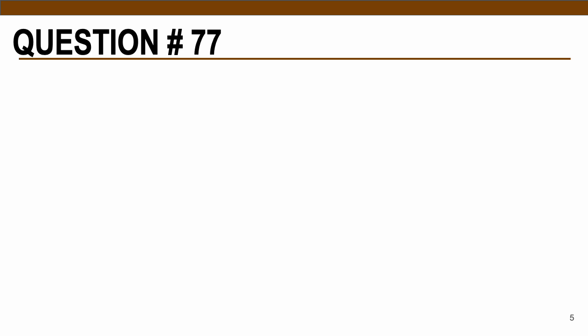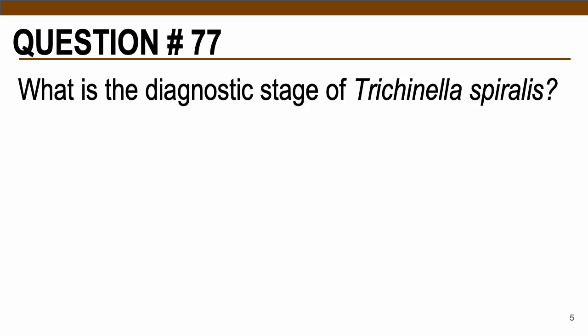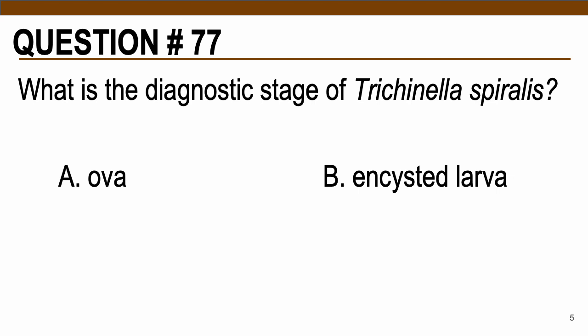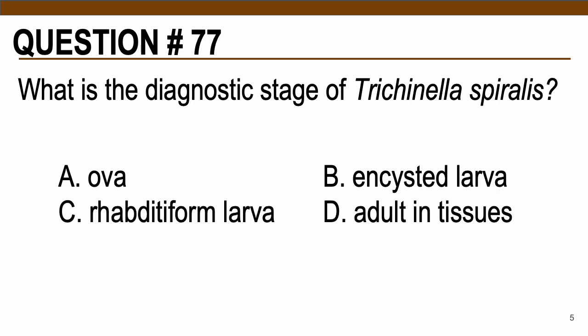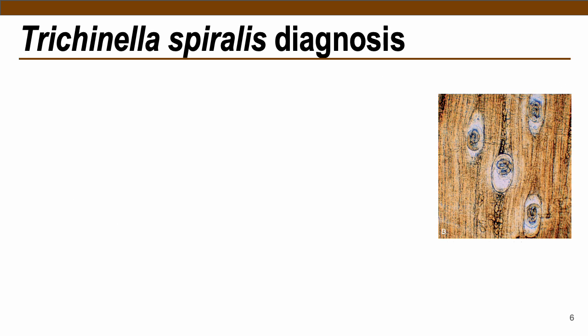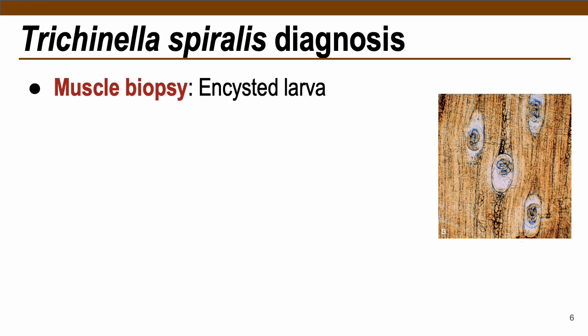Question number 77: What is the diagnostic stage of Trichinella spiralis? When we say diagnostic stage, this is where we use laboratory methods to diagnose a specific parasite. The choices are: A — ova, B — encysted larvae, C — rhabditiform larvae, or D — adult in tissues. The correct answer is letter B, encysted larvae. For Trichinella spiralis diagnosis, the best method is muscle biopsy, where we can observe the encysted larvae, which is the diagnostic stage for the parasite.